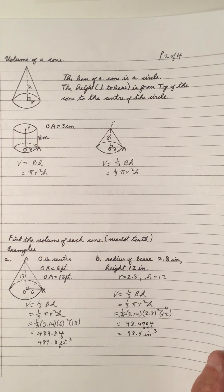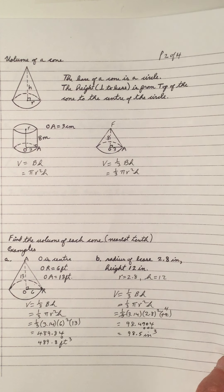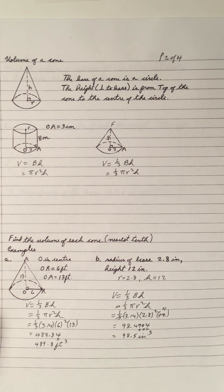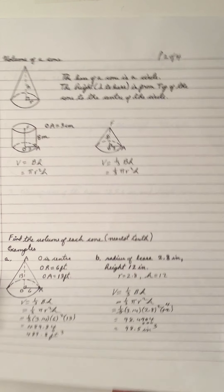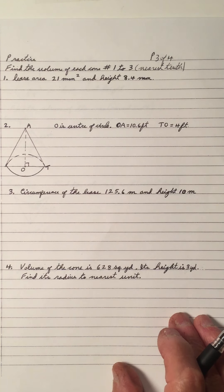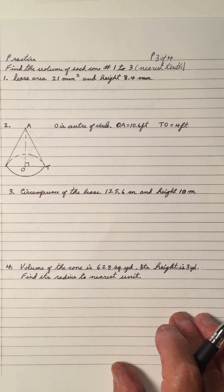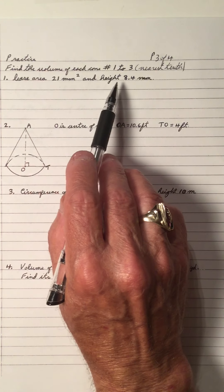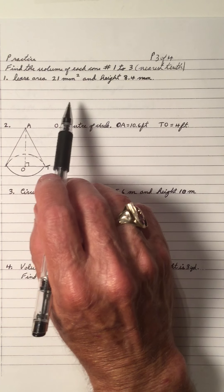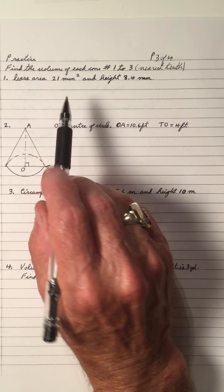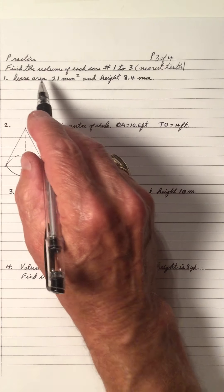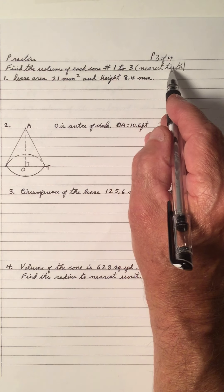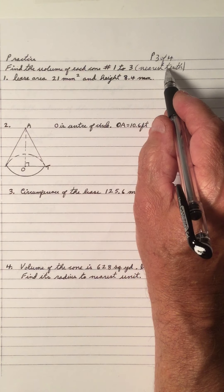Again, the volume of a cone is one-third the volume of a cylinder. A cylinder has a base which is a circle, and a cone has a base which is a circle. Let's do a bit of practice — pause the video, read the question, work it out, and then play it back. Do that for each question. Find the volume of each cone, numbers 1 to 3, rounding to the nearest tenth.